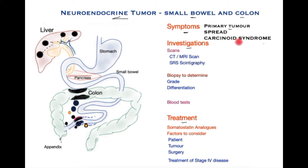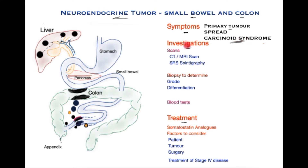Since these tumors can secrete chemicals, a particular condition called carcinoid syndrome may occur where these chemicals become active, causing diarrhea, flushing, and abdominal pain. The most dangerous aspect is the effect on the heart from these chemicals, called carcinoid heart.